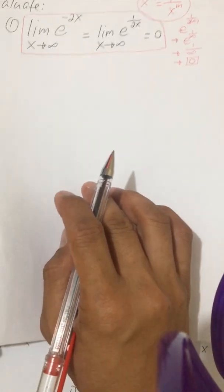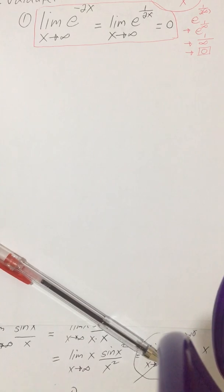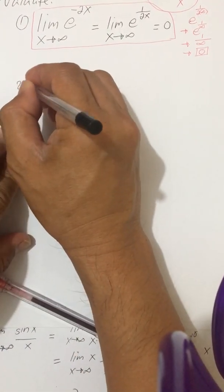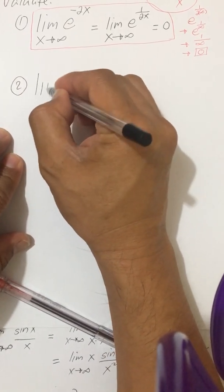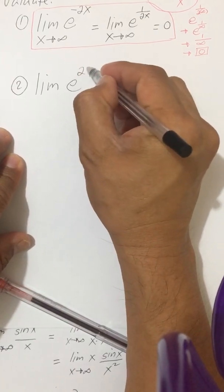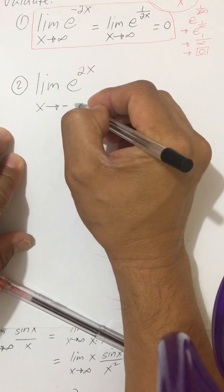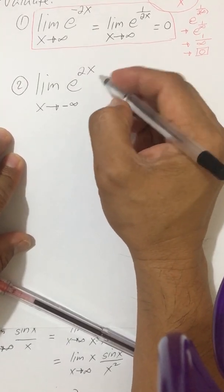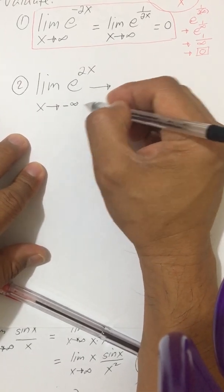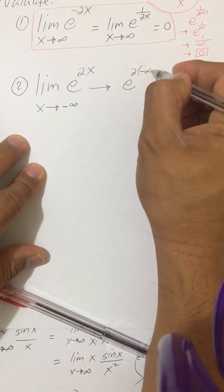Next, number 2: evaluate the limit of e to the power of positive 2x as x approaches negative infinity. If we substitute negative infinity for x, we get e to the power of 2 times negative infinity.